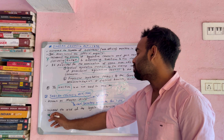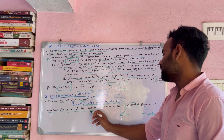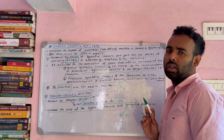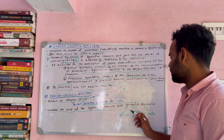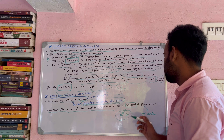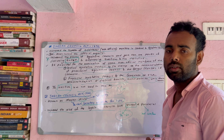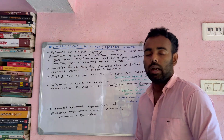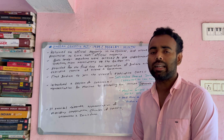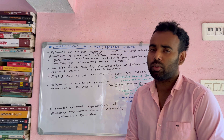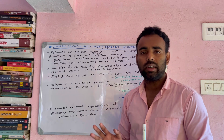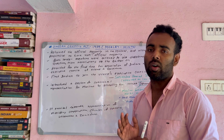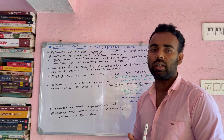Another item of the Act is the expansion of the Legislative Council — both central and provincial. There were many non-official members. The central number was increased from 16 to 60. The provincial number was also increased. The central and provincial councils retained official majority alongside non-official members.